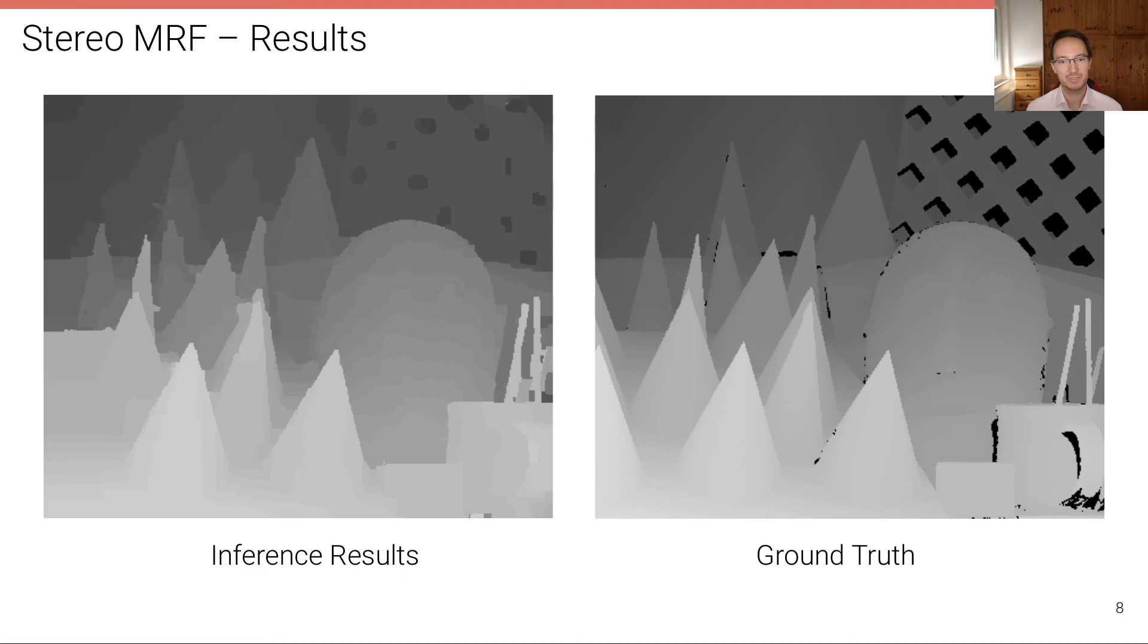And now here's a result for the scene that we are already familiar with, the Middlebury cone scene. And you can see how the inference result using such an MRF are much improved with respect to just a local block matching algorithm. And that's also the reason why, for example, in the paper of Zbontar and LeCun on Siamese stereo matching, these local Siamese matching costs that are computed by a deep network are complemented with inference in a Markov random field in order to overcome ambiguities and to further improve on the estimation result of this local matching cost, winner-take-all solution.